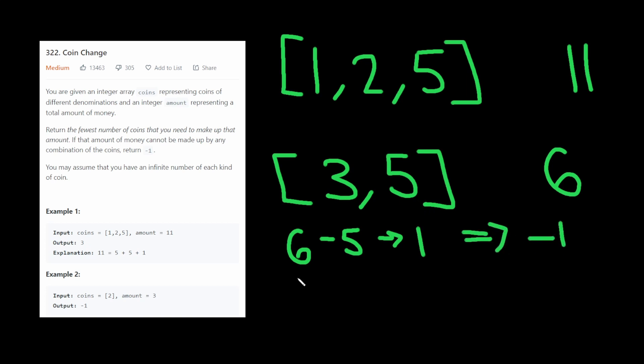So in this case, we return negative 1. The other case we do is 6 minus 3, which becomes 3, and then 3 minus 3 becomes 0. So we return, in this case, 2. And the thing to note here is that we don't ever try a coin that's greater than the current amount.